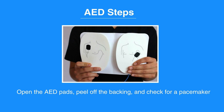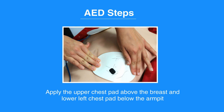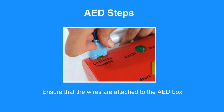Then, open the AED pads, peel off the backing, and check for a pacemaker. Make sure not to place the pads on top of the pacemaker. Apply the upper chest pad above the breast and the lower left chest pad below the armpit.